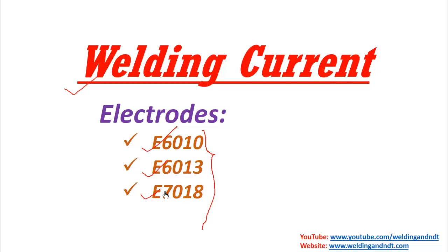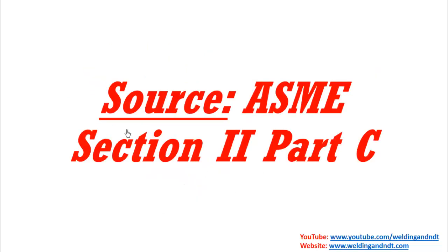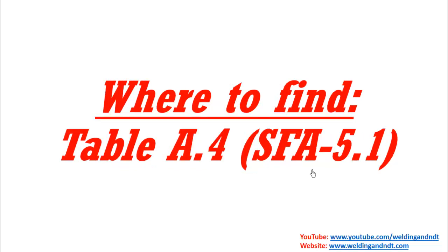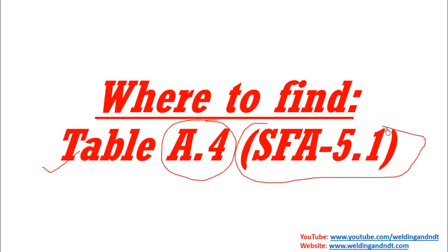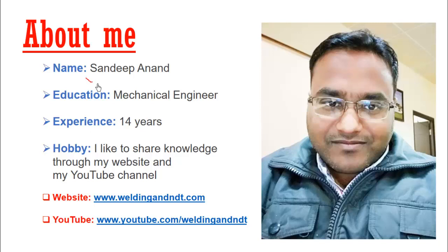I'll also explain how to find the current range for electrodes other than these. The source to determine the welding current range is ASME Section 2, Part C. In ASME Section 2, Part C, this current range is given in Table A.4, which can be found in SFA 5.1. In SFA 5.1, Table A.4, you can find the current range for each and every carbon steel electrode.